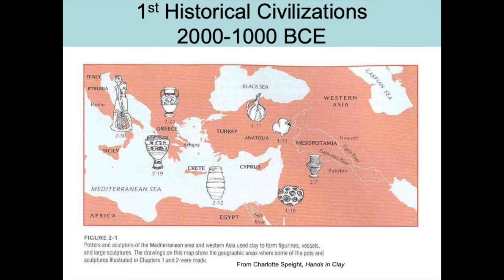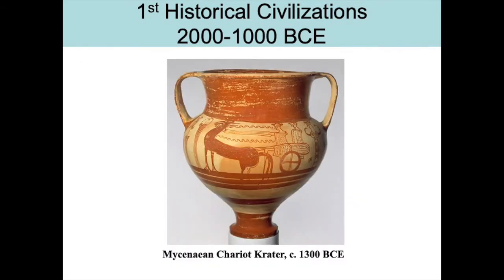Mycenaean is the term used to describe the art and culture of mainland Greece from approximately 1600 to 1100 BCE. During the Mycenaean period, the Greek mainland enjoyed an era of prosperity centering on such strongholds as Mycenae, Tyrns, Thebes, and Athens. Contact with Minoan Crete played a decisive role in shaping Mycenaean culture, especially in the arts. Wide-ranging commerce circulated Mycenaean goods throughout the Mediterranean world.